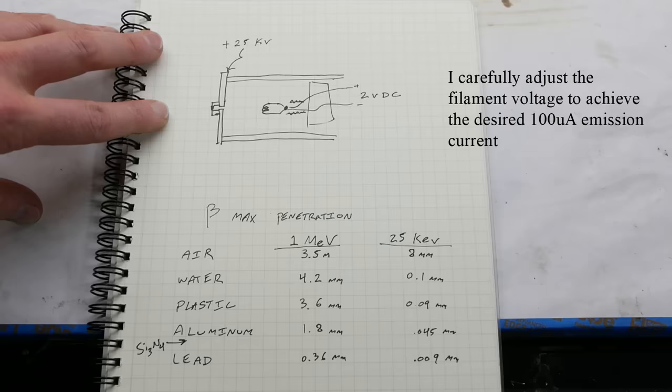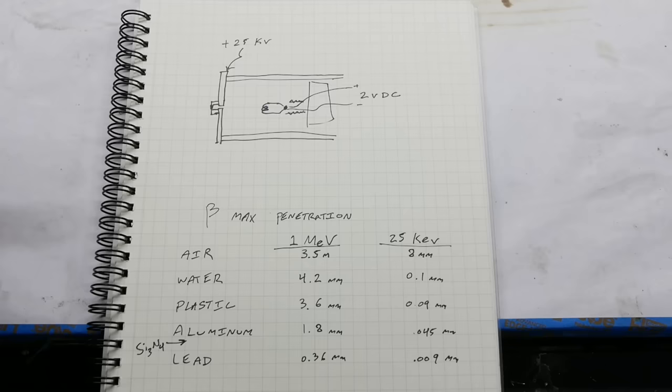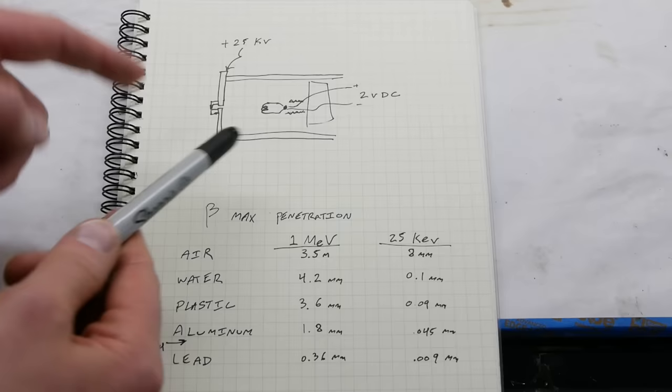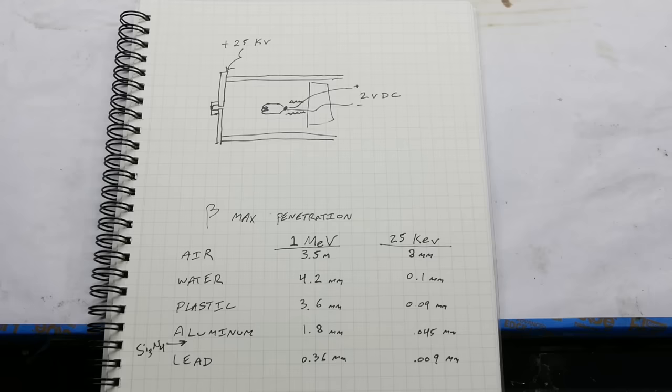So the question is, how do we know 100 nanometers is thin enough or thick enough for this aperture? It all comes down to how fast the electrons are going, how dense the material is in the aperture, and how thick it is. For an arbitrary thickness, we could just speed the electrons up and force them through.